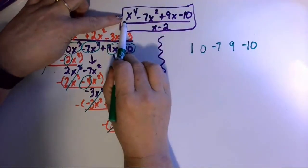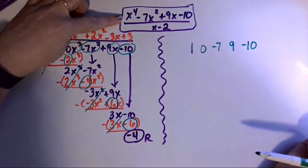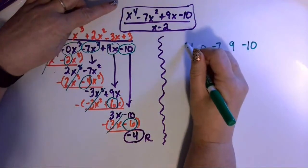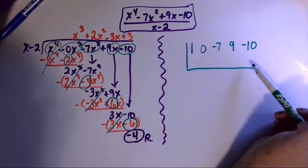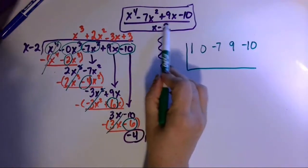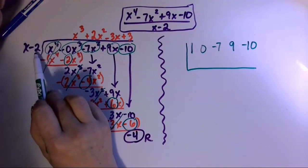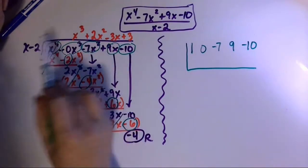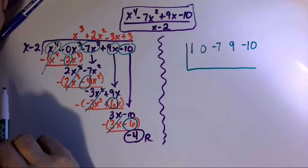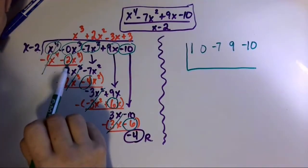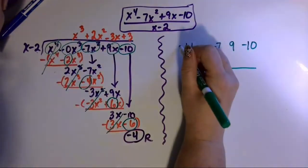Instead of putting my division bar right-side up, I'm going to flip it upside down to organize the work better. And rather than writing the entire divisor out front, it's really just the negative 2 that impacts these values — because remember, the first term always cancels when I distribute. Rather than multiplying by negative 2 and then changing the sign each time, I'll change the sign right at the beginning and put a positive 2, so I can just add to combine like terms.